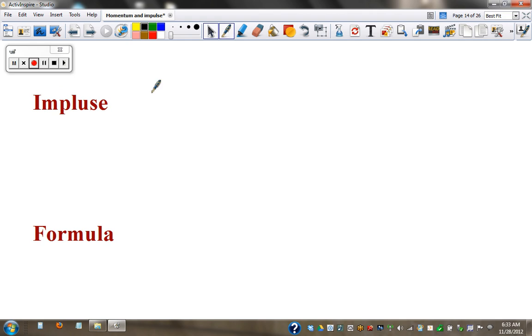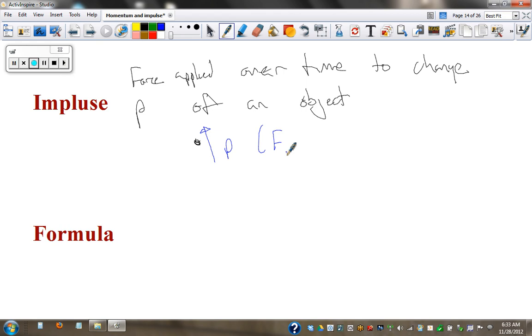Okay, here's your definitions. Impulse is a force applied over time to change momentum. The P means momentum of an object. Now this could be changing the momentum by speeding it up. Increasing momentum would be an example of force from the engine. That would be an impulse force to change momentum, to increase it.